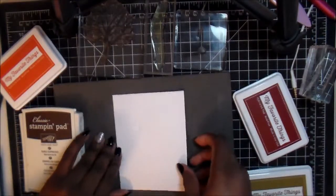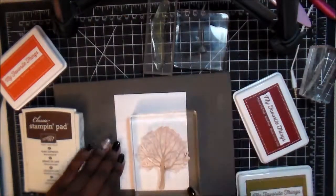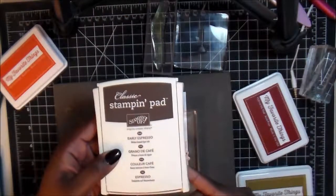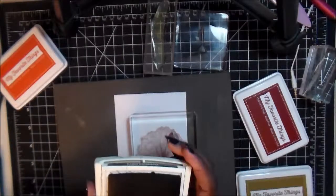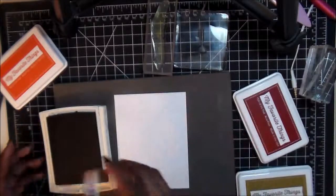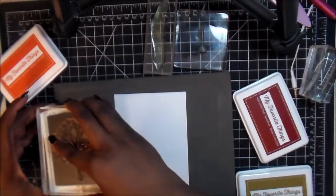So I got all my inks around me and I already have my stamps on blocks. We're using My Favorite Things Hybrid ink and we're using the Tangy Orange, Wild Cherry, Factory Green, and Brick Red.